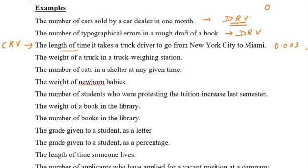Example 4: the weight of a truck at a weighing station. Weight can be 65.2, 65.03, 68.11, and so on — so this is a continuous random variable.